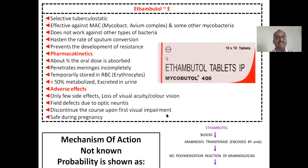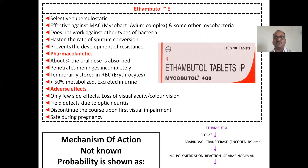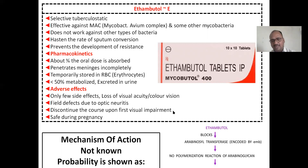Ethambutol (E): the exact mechanism of action is not fully known. It probably blocks the arabinosyl transferase enzyme, preventing polymerization reactions, thereby interfering with the cell wall synthesis. This is a probability, not exactly confirmed. It hastens sputum conversion, and these are very important points about ethambutol.